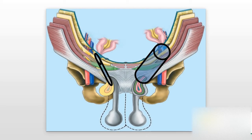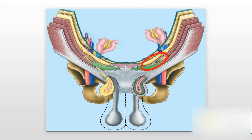Let's look at the parts of the inguinal canal one more time. Here we can see the internal ring, which is the inner part of this cylinder itself, and that is what is in direct contact with the bowel and the intra-abdominal organs. Then we have the length of the canal itself, which is called the inguinal canal.